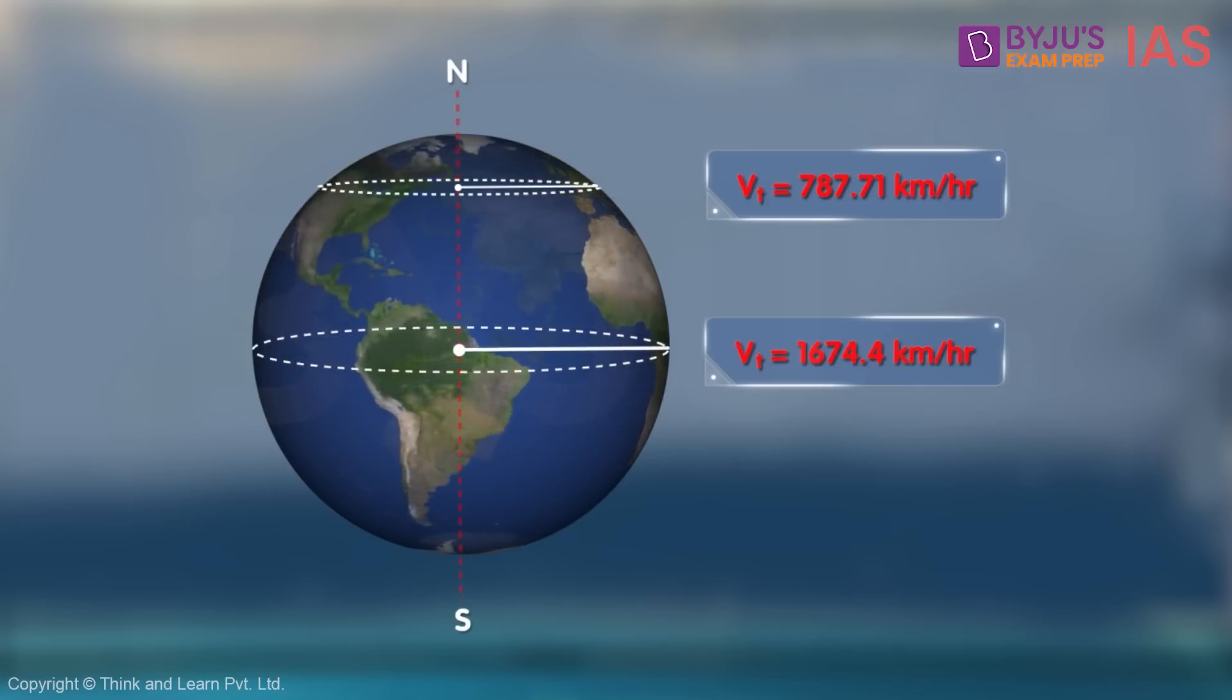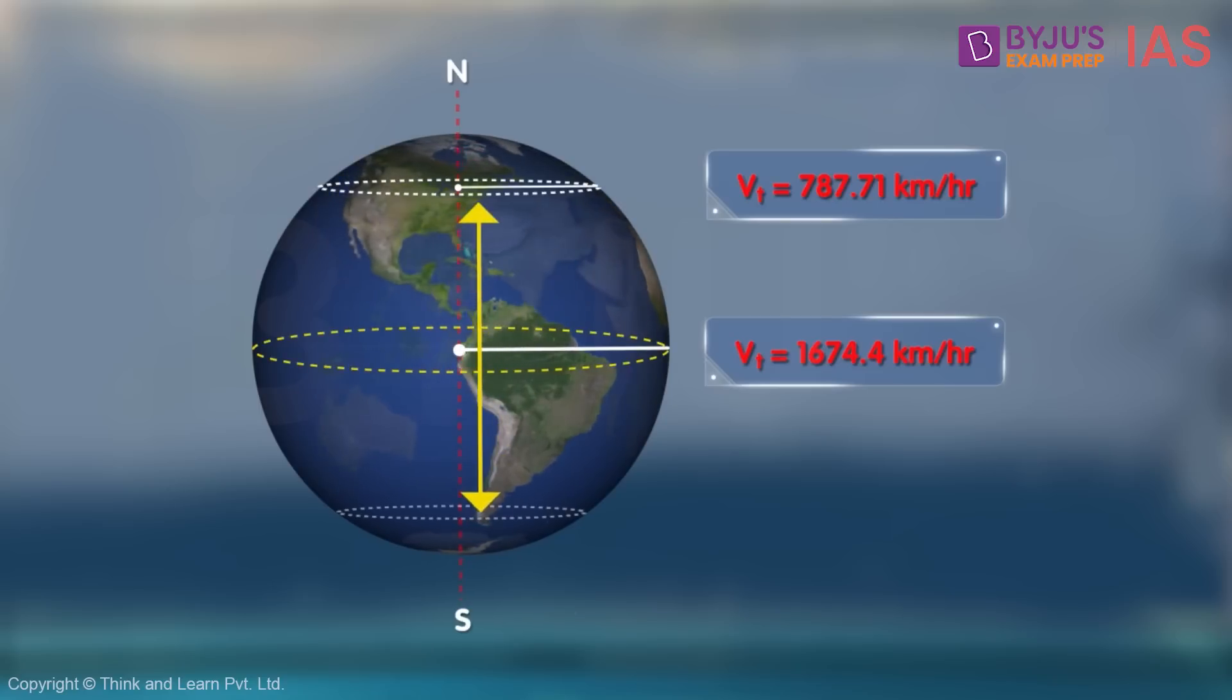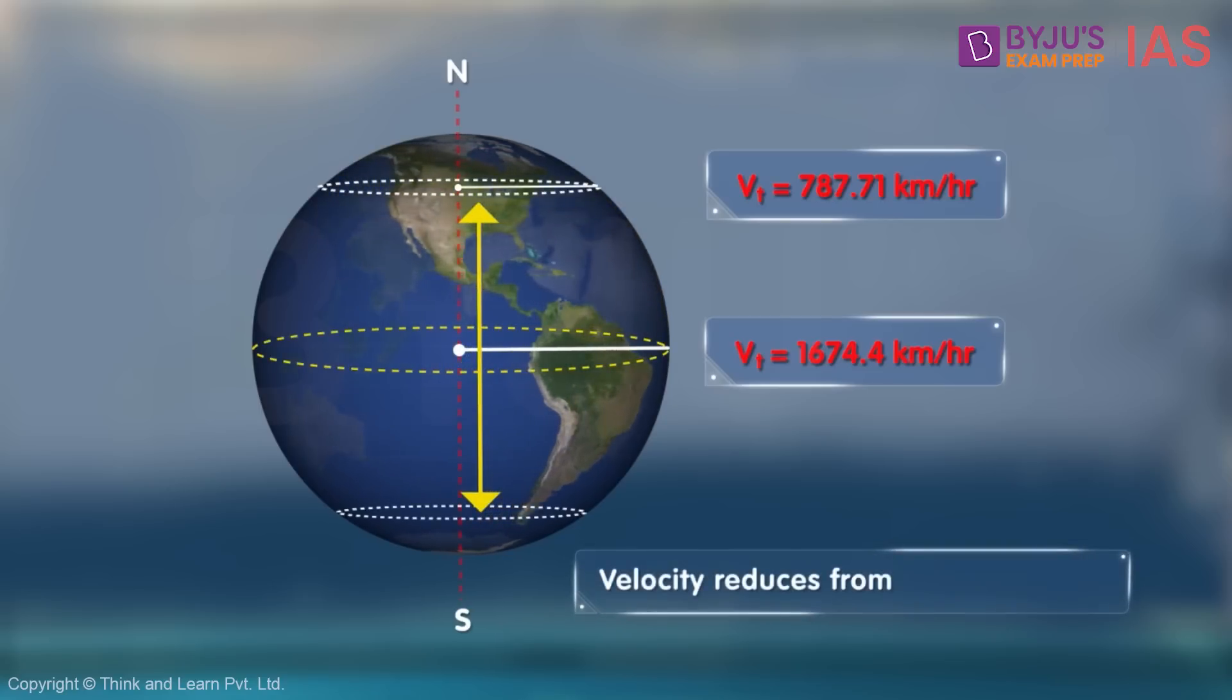Thus, we can say, as we move from the equator towards the poles, the velocity reduces.